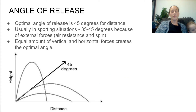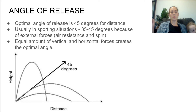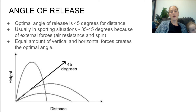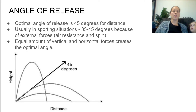If we were aiming for the optimal angle with no external forces, 45 degrees would be the optimal angle. Usually in sporting situations though, we aim for 35 to 45 degrees, because air resistance and spin act upon the ball for longer when it is in flight for longer.